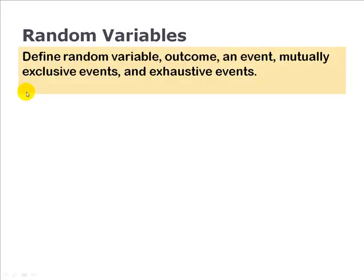Here's a learning outcome from last year's FRM that asks us to define the random variable outcome, an event, mutually exclusive events, and exhaustive events. Quite a few terms there, some with subtle differences in meaning.